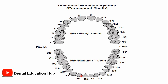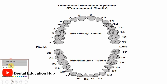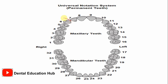In the universal numbering system, this is the central incisor, lateral incisor, and canine. For the right maxillary canine, the number is 6, and for the left maxillary canine, the number is 11.